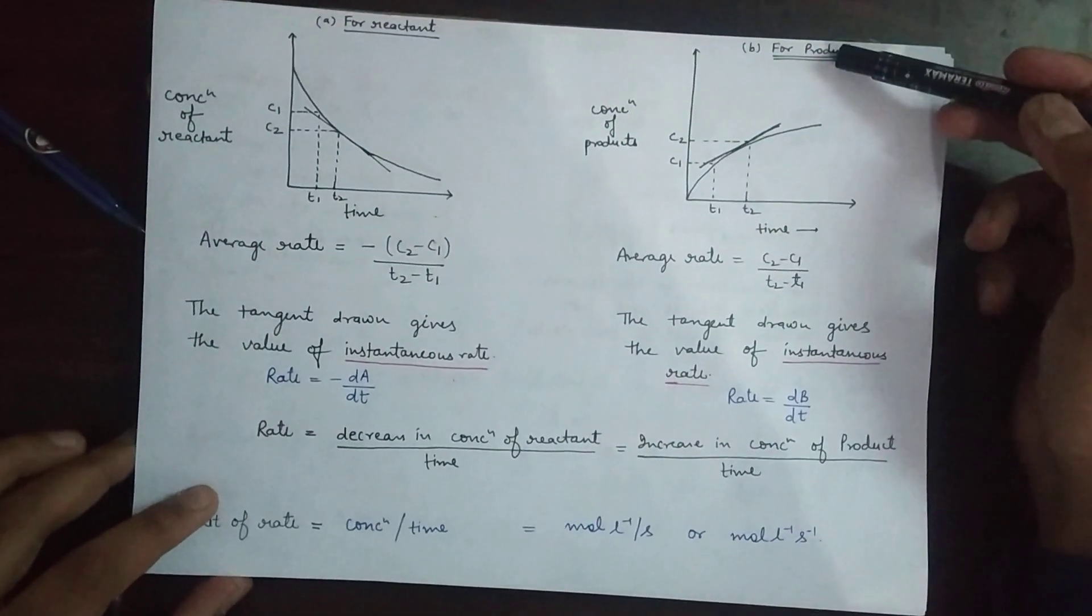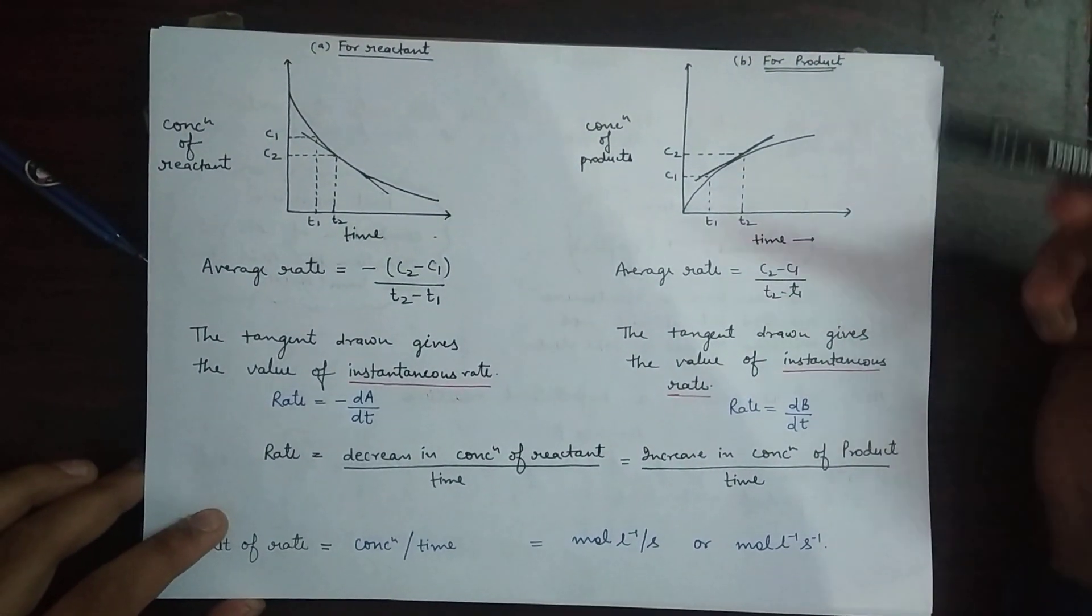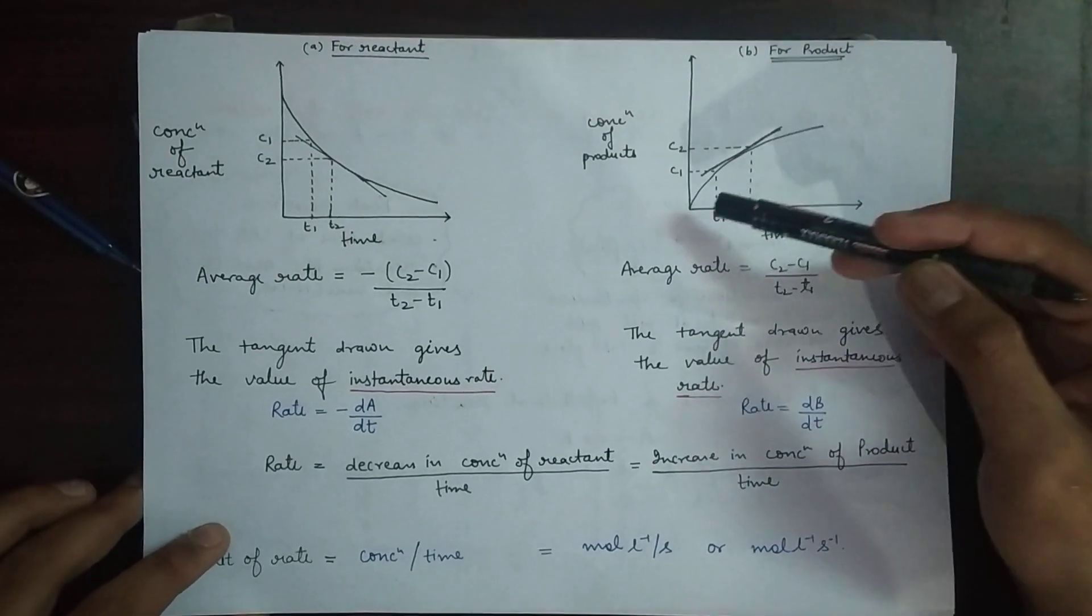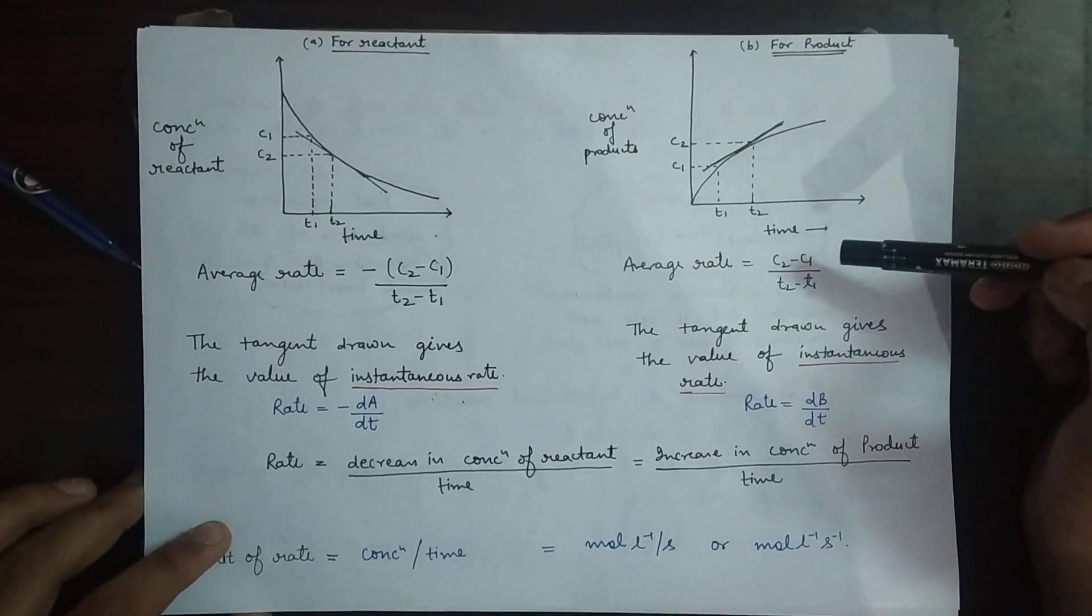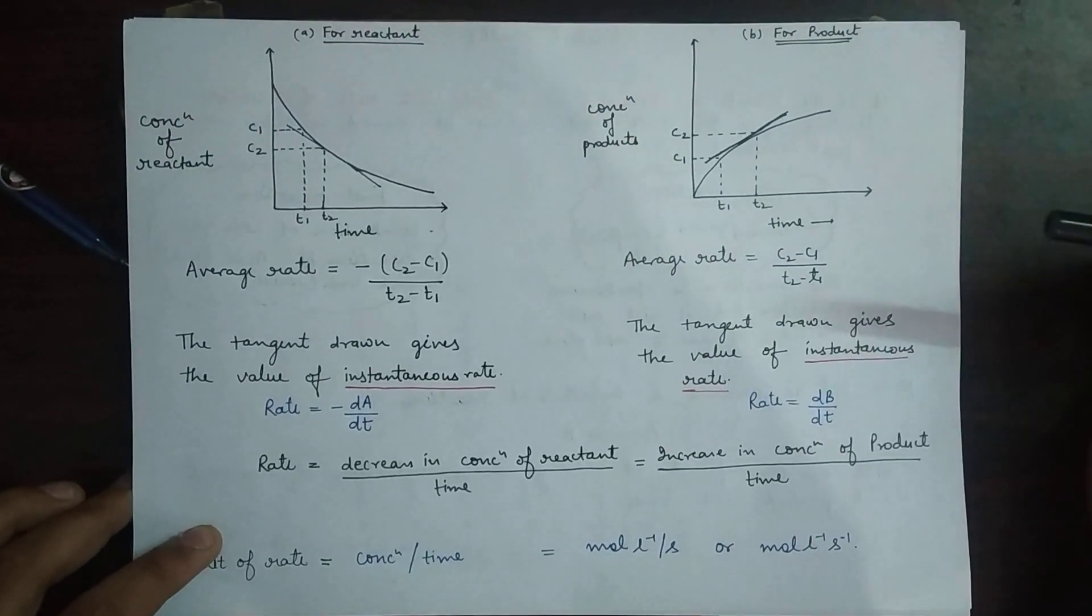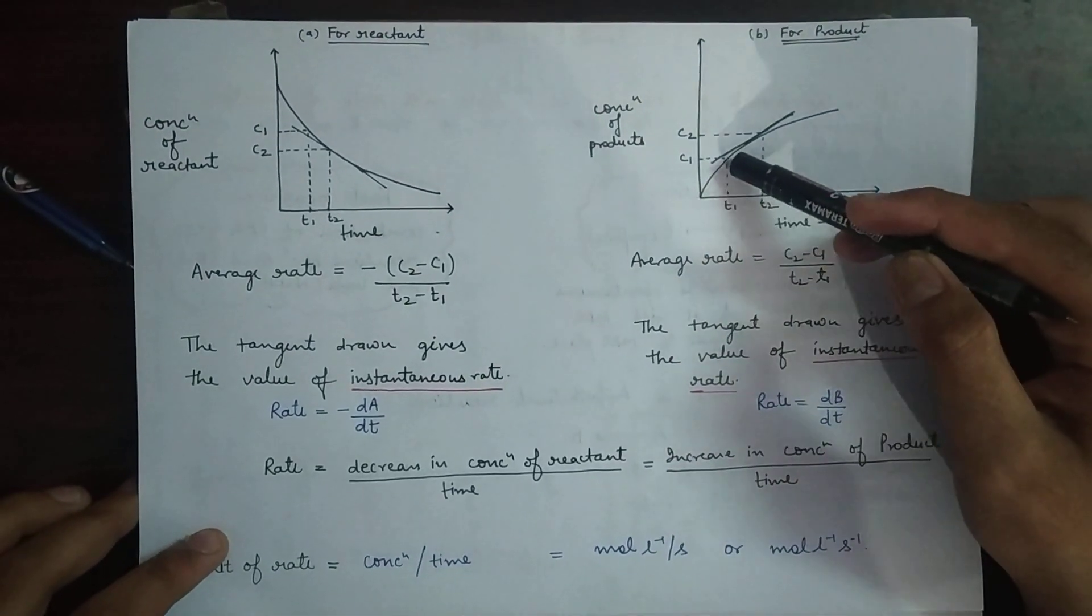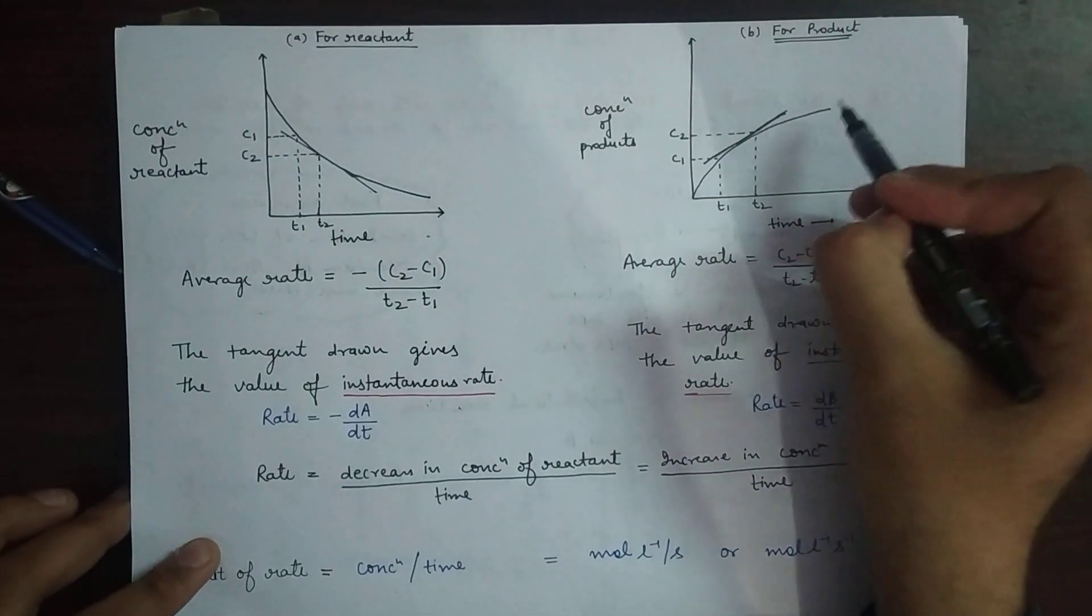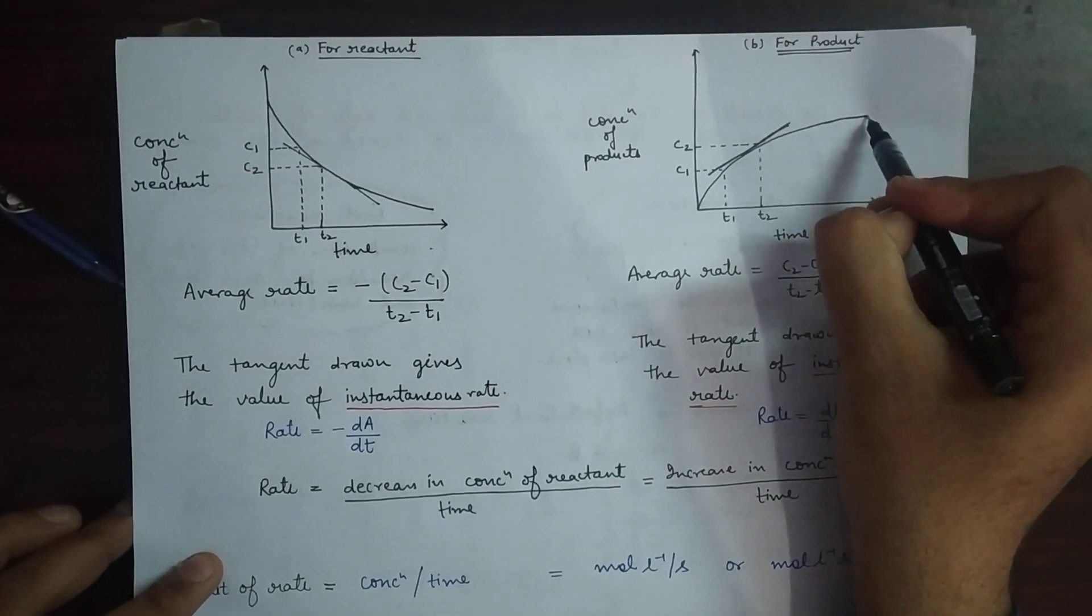Now, on the other hand, when we see for the product, what we have observed is the graph started from zero. It is obvious that at time zero, the concentration of product is also zero. With the course of reaction, the concentration of product starts to increase and it will obtain a saturation state after a particular time.